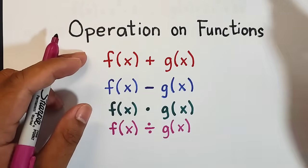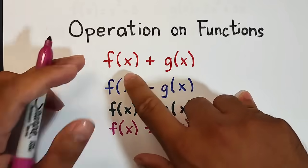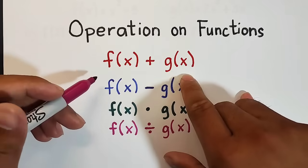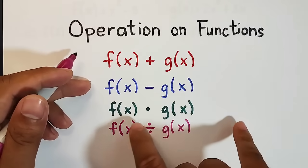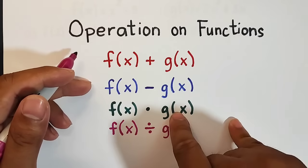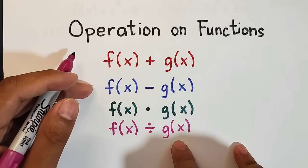So what we have here are the notations for operation on functions. We have the addition notation f(x) + g(x), f(x) - g(x) for subtraction, f(x) times g(x) for multiplication, and f(x) divided by g(x) for division.